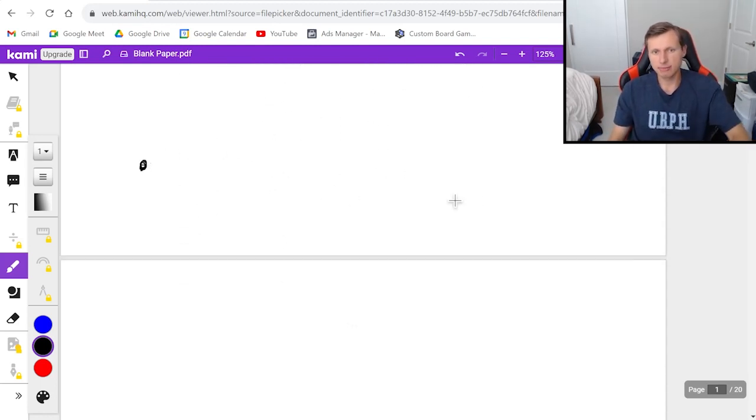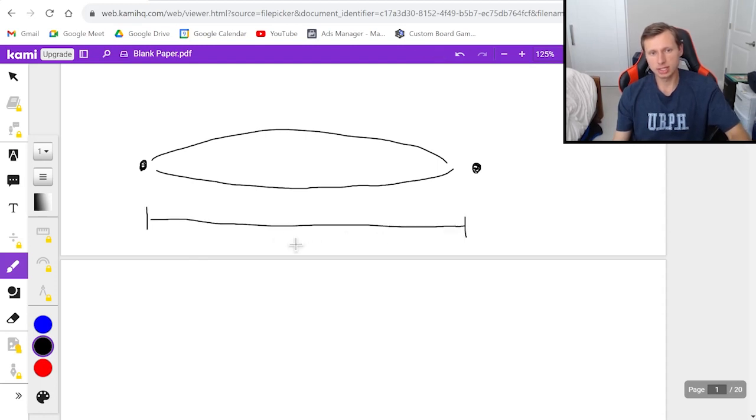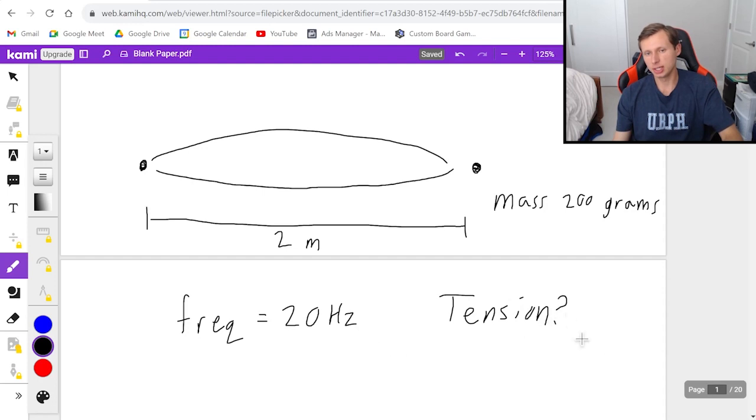Let's say I have a string oscillating up and down between two points really fast, something like this. Let's say the length of this rope is two meters long. Let's say it has a mass of 200 grams, which yes, we'll have to convert that to kilograms, not that hard. And then we'll say it has a frequency of 20 hertz. And ultimately my question is going to be, what is the tension in this string?